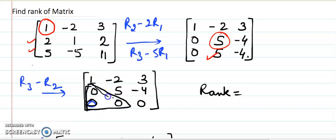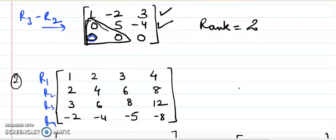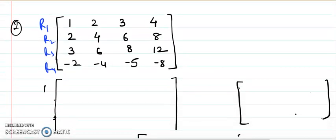We can verify that echelon form is achieved. Counting the non-zero rows: the first row is non-zero, the second row is non-zero, and the last row is a zero row so we do not count it. Therefore the rank of this matrix is 2.